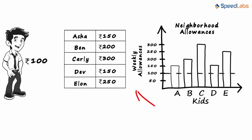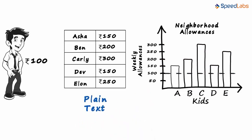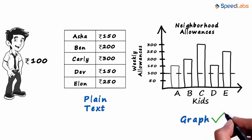Zen's dad understands this better as it is visually appealing. The table that Zen showed his dad contained plain text, which is a bit difficult to analyze. The graph comparatively is much easier to analyze.